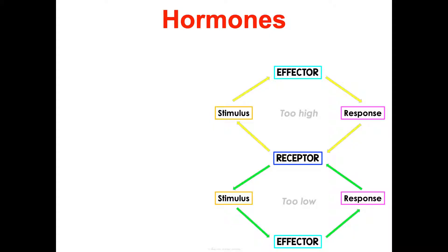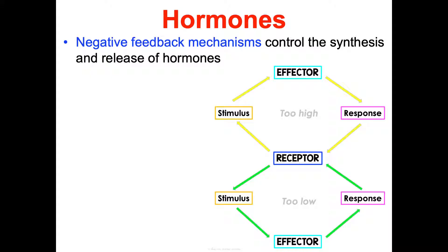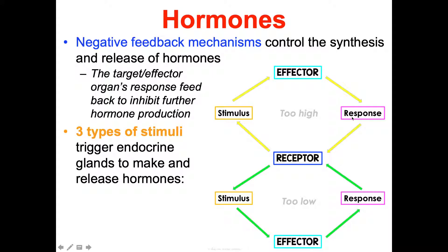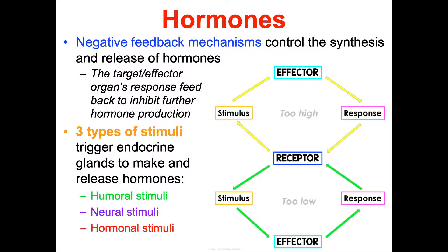The endocrine system specifically uses negative feedback mechanisms to control the synthesis and release of hormones. The target effector organ's response feeds back to inhibit further hormone production, keeping things within a normal range. There are three types of stimuli that trigger endocrine glands to make and release hormones: humoral stimuli, neural stimuli, and hormonal stimuli.